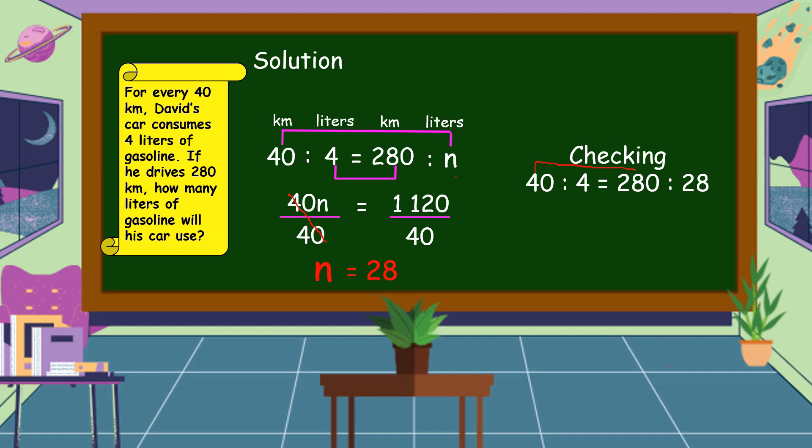Then we're going to multiply the extremes and the means. So 40 times 28 is equal to 1,120, and 4 times 280 is equal to 1,120. It means that our answer is correct.